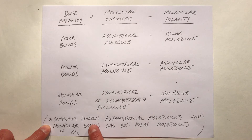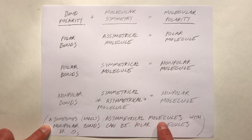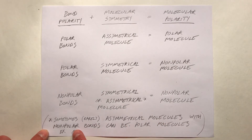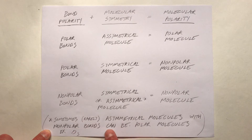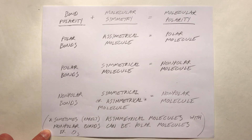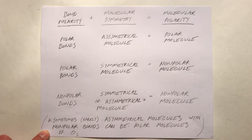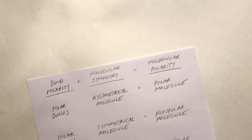There are a few exceptions to this. Sometimes, though rarely, you can have an asymmetrical molecule with non-polar bonds that can be a polar molecule. An example would be the ozone molecule, but those are pretty rare.